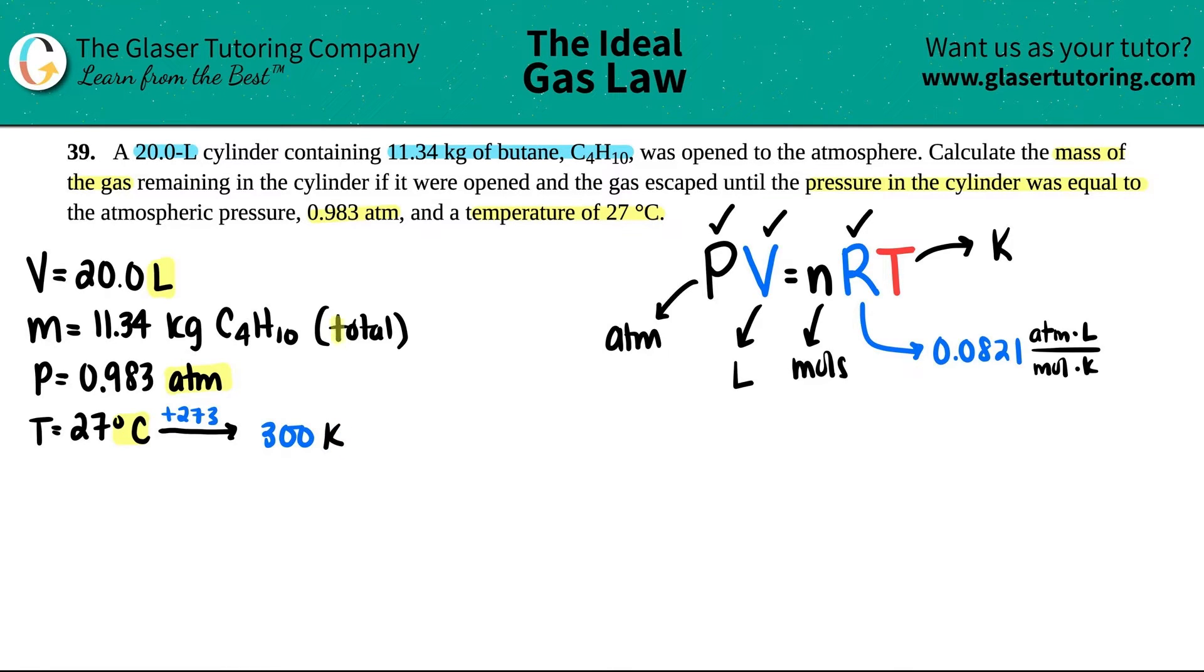Now keep in mind that this was total. This was after it was open to the atmosphere. Now they're saying that the gas was open to the atmosphere and then it correlated with this pressure and this temperature. So in essence, we have to solve for that amount of moles. They just gave us a total mass beforehand, but that is not the amount of moles in which the gas was opened, right? So in this case, we're going to use the temperature and we're going to solve for the N value.